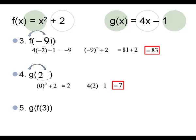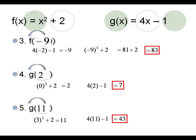Try number 5. You're going to start by doing Frank of 3: 3 squared plus 2. That's 9 plus 2, which is 11. Take that answer 11 and plug it into George as x. 4 times 11 minus 1. That's 44 minus 1, which is 43 for a final answer.